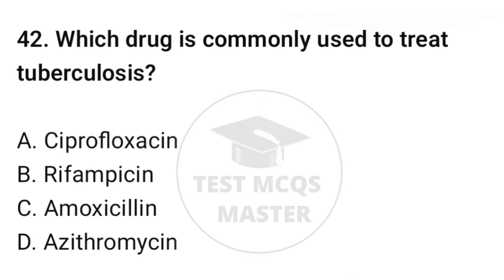Question number forty-two: which drug is commonly used to treat tuberculosis? The correct option is B: Rifampicin.